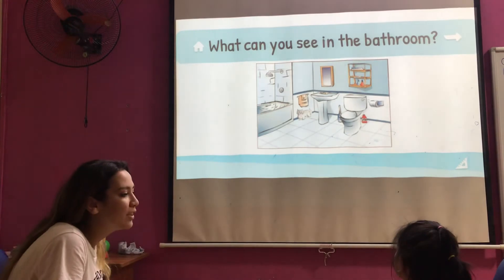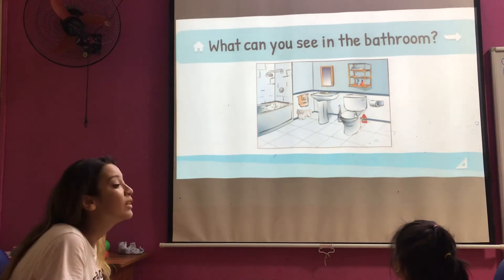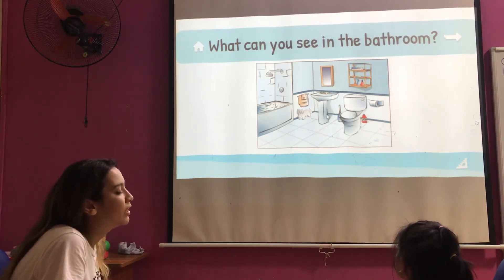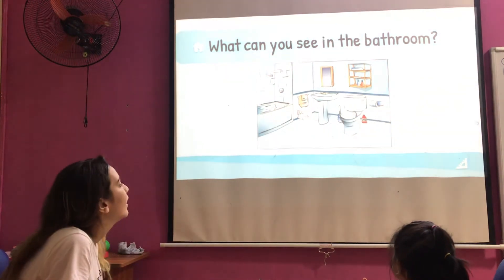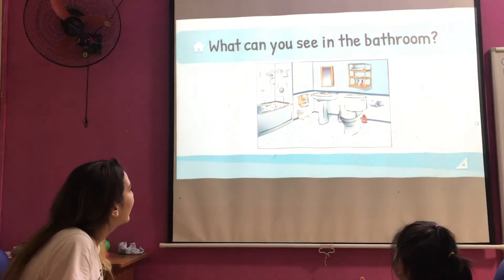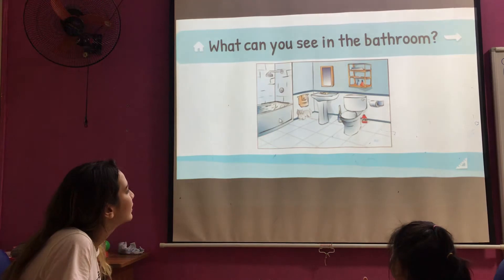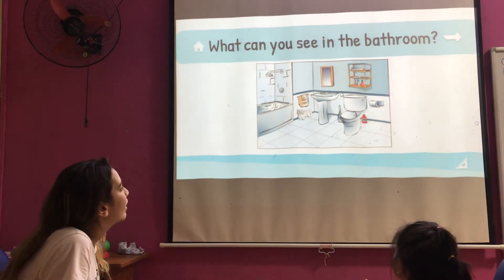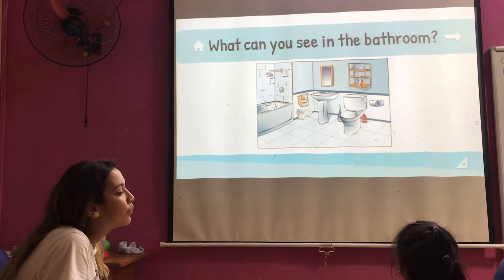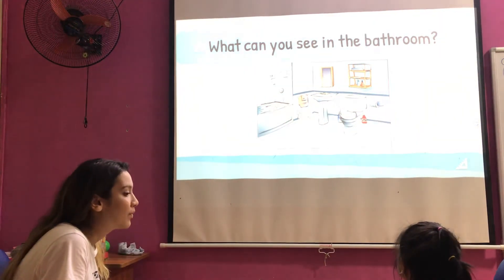What can you see in the bathroom? What can you see? What is this? It's a toilet, right? Okay. And what is this? It's a sink, right? And what is this? It's a cat, right? And what is this? A towel, right? And what is this? A towel, right? And what is this? It's toilet paper. Good. Okay.